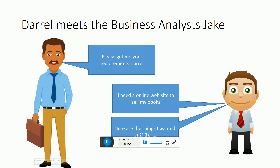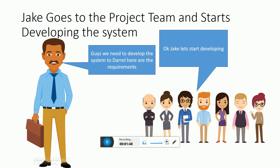Darrell tells Jake his idea of selling books online and says: 'I need an online website to sell my bookstore books.' So Jake asks for the requirements. Darrell lists what he wants from the system. Jake then goes to the project team and starts developing the system, but without verifying that he has correctly understood Darrell's requirements.